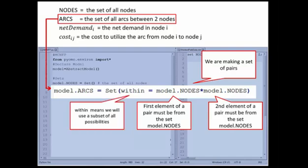And this within word tells us that we're not making every single combination of nodes cross nodes. We're actually only going to specify a subset of all the possible combinations.